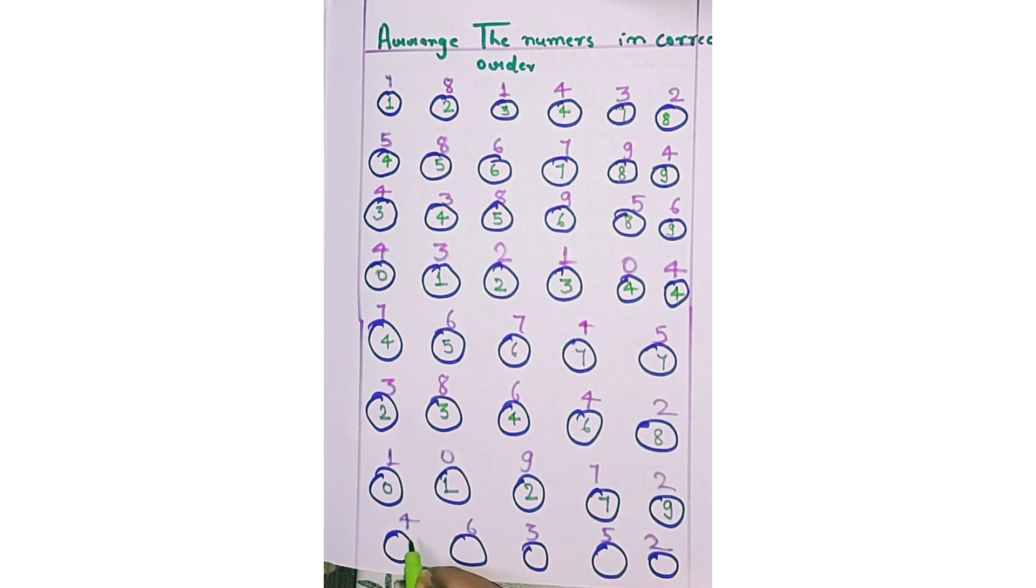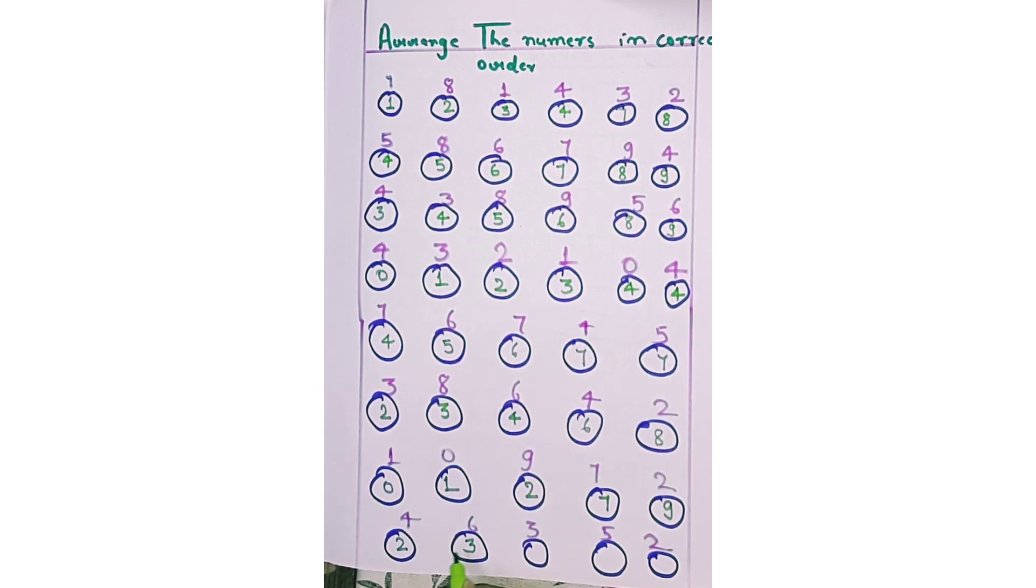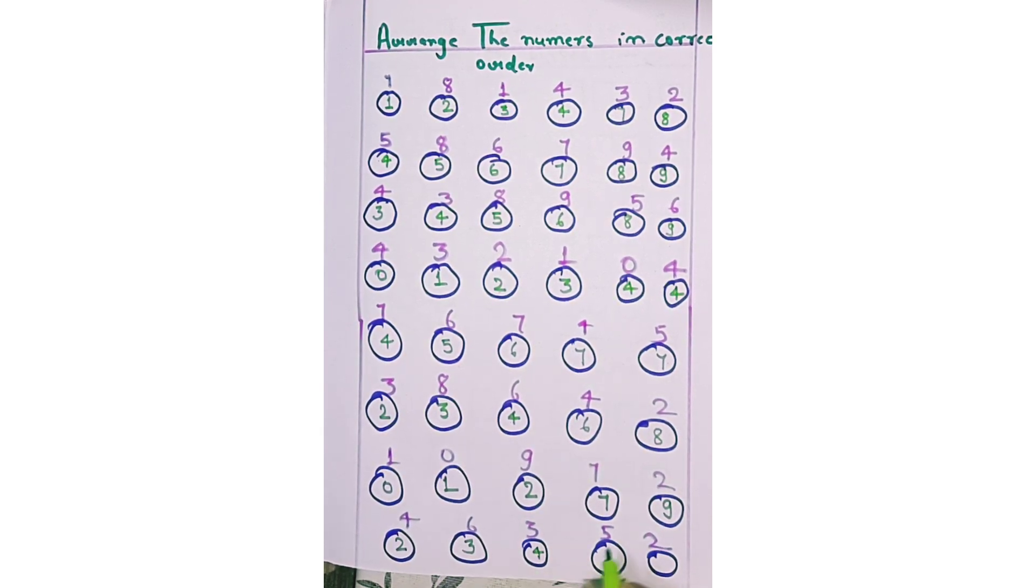Next 4, 6, 3, 5, 2. Which one is smallest? 2. Right, 2. Next 3, next 4, next 5, and last 6.